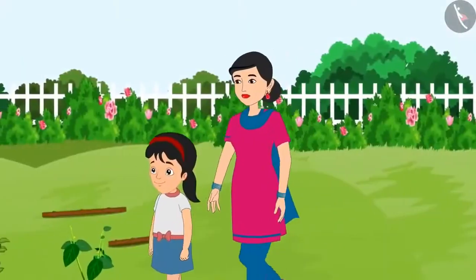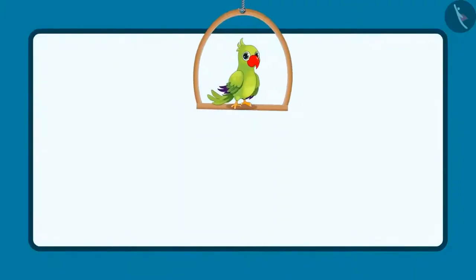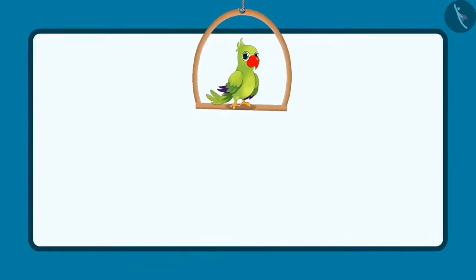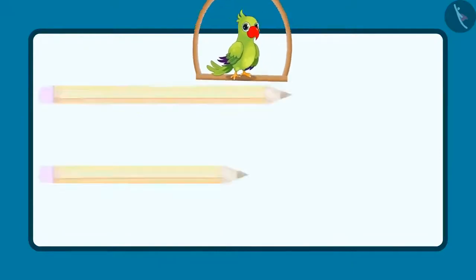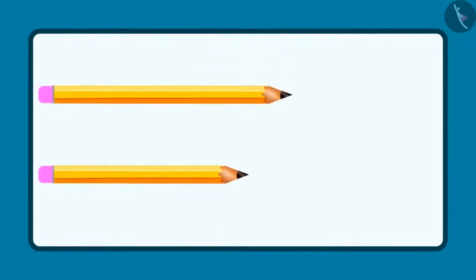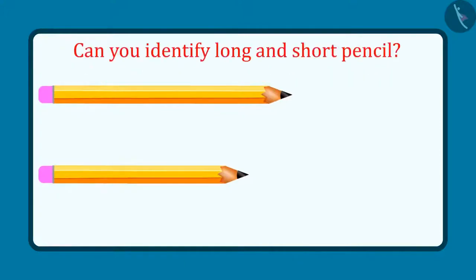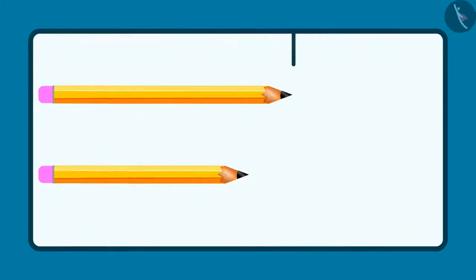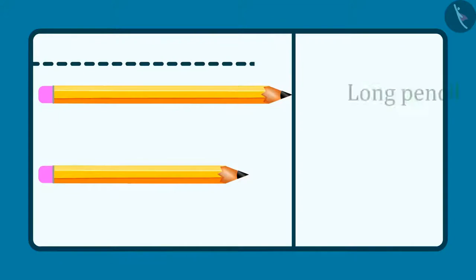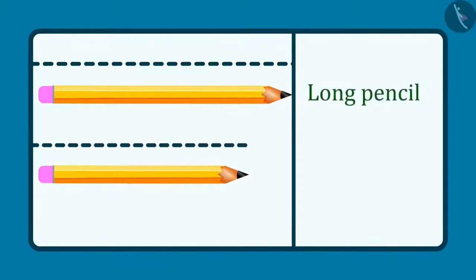Now let's go home. So kids, can you also identify the long object and the short object out of two objects? Come, let's see. These are two pencils. Now tell me, out of these two, which one is the long pencil and which one is the short pencil? Out of these two, this pencil is long and this pencil is short. Even you had the same answer, right?